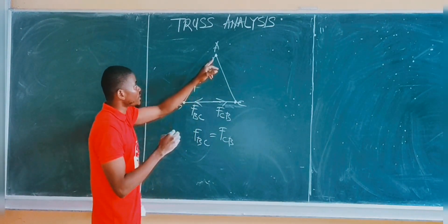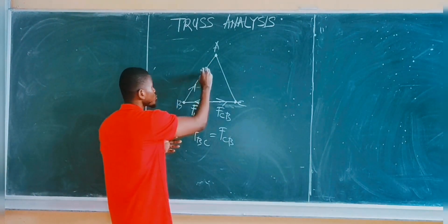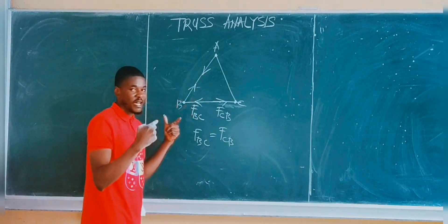So it also means that this other joint also has a tensile force. So the force is also pulling out of the joint. You can see that these two forces are moving in opposite directions.